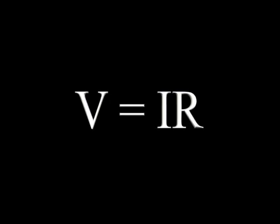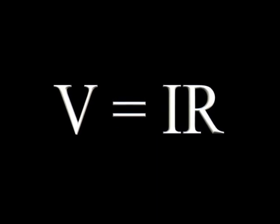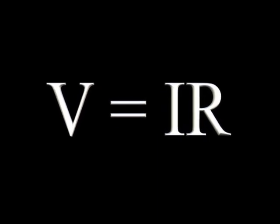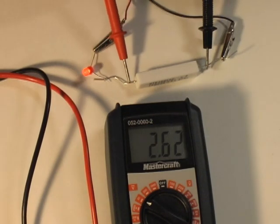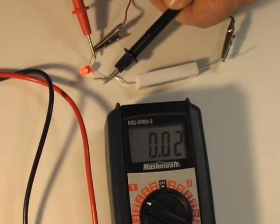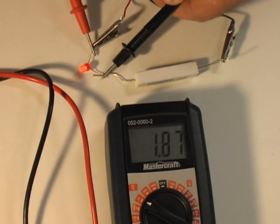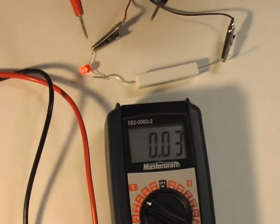So that's Ohm's Law. If you know two of the values associated with a load in a circuit, you can calculate the third. This law is very useful — it is often necessary to determine current flow before constructing a circuit. LEDs, for instance, have a narrow current tolerance. Ohm's Law allows you to calculate the proper resistor to use with a specific power supply and LED.